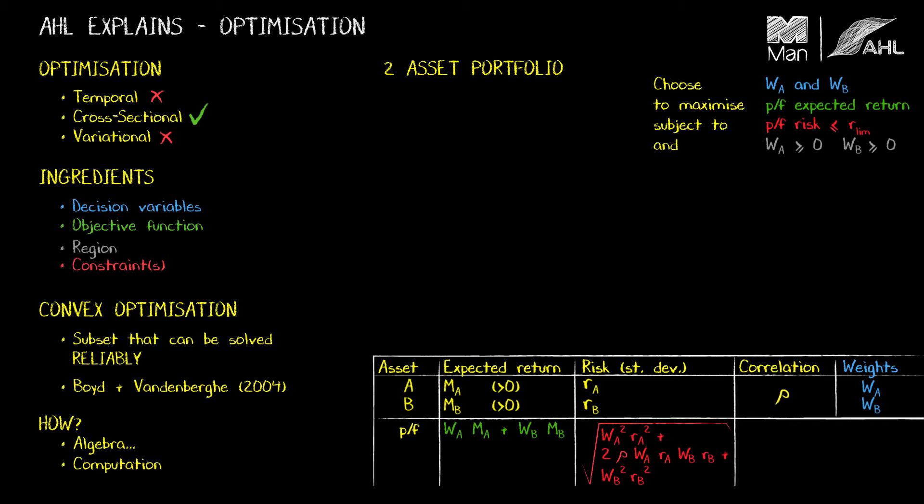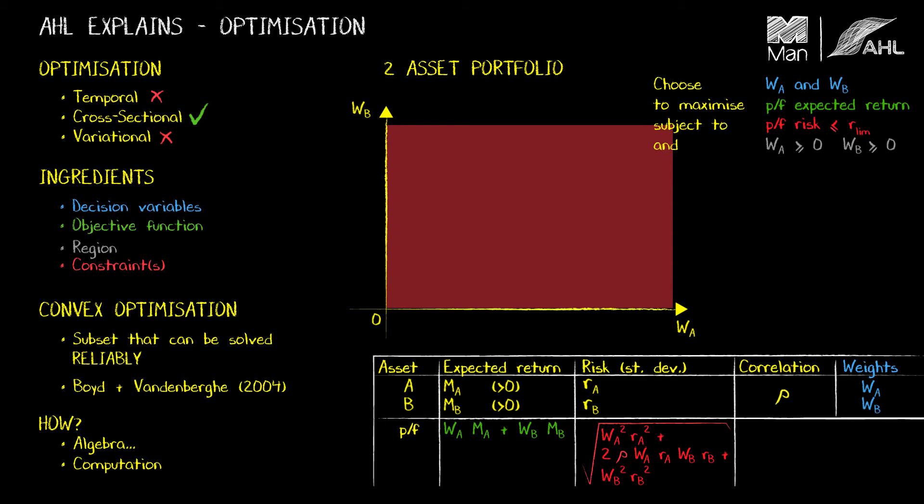So let's draw out a set of axes now. This one is WA, this one's for WB. I have the origin here. The first thing to do is to note the region we're in. It says that both WA and WB are both greater than or equal to zero. So I'm in this quadrant. Anything outside that quadrant is illegal to me.